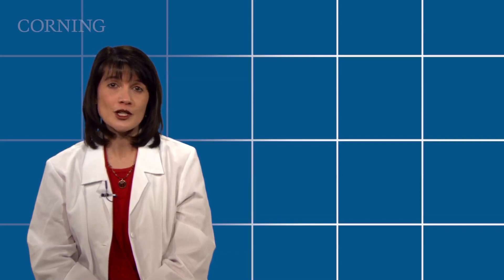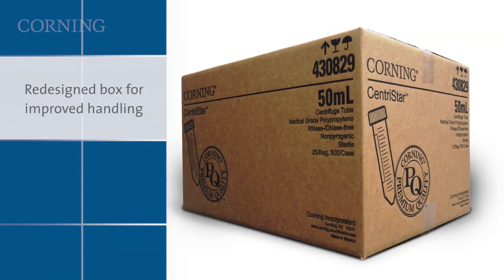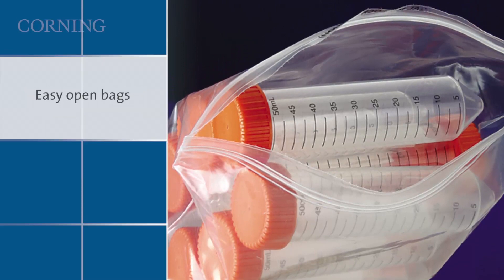Constructed to be ergonomic to prevent overuse injuries and easy to handle, the Corning Centristar centrifuge tube has a redesigned box for improved handling, easy open bags to reduce strain when opening, and easy on, easy off caps engineered for one-handed use under the hood.